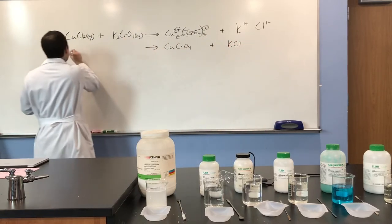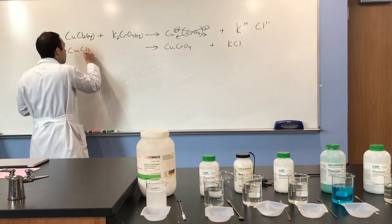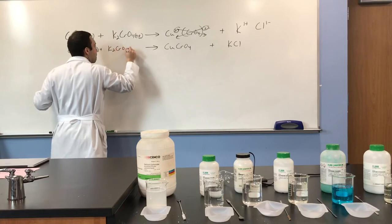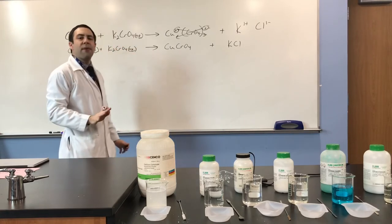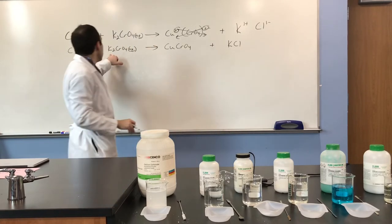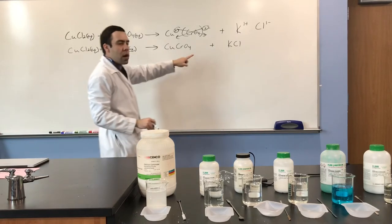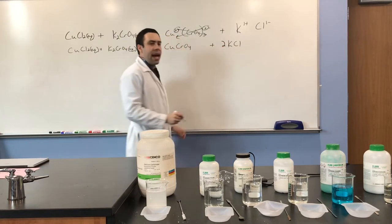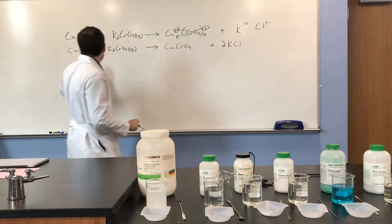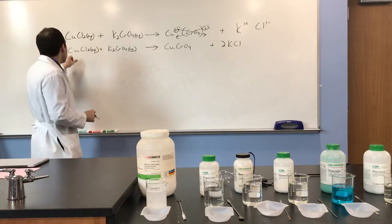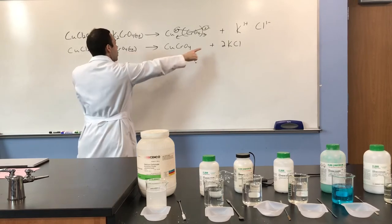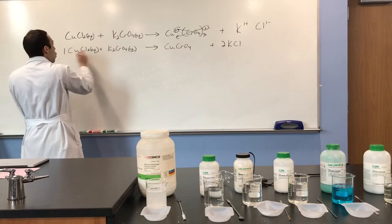We rewrite our reactants. Before we go any further, we have to balance the equation. I see that there are two potassiums on the right side but only one on the left, so I'm going to put a 2 here to balance the potassiums. When I do that, I also change the number of chlorines. I check and I also have two chlorines, so the equation is balanced: 1 and 1 on the coppers, 2 and 2 on the chlorines, 2 and 2 on the potassiums, and 1 and 1 on the chromates.